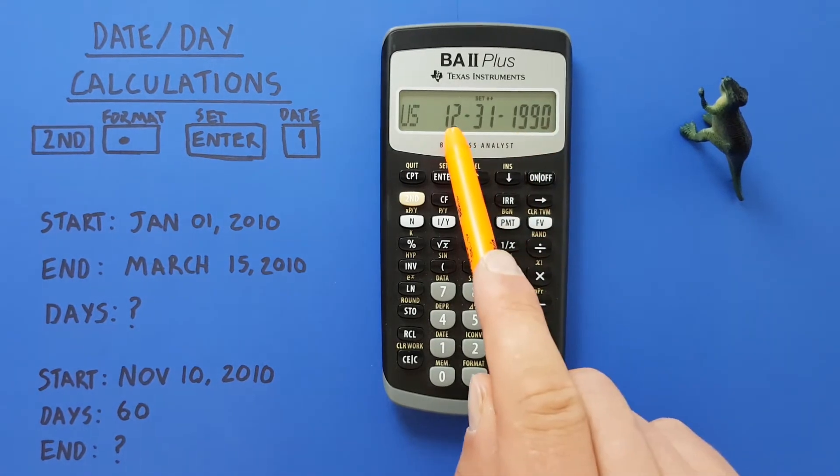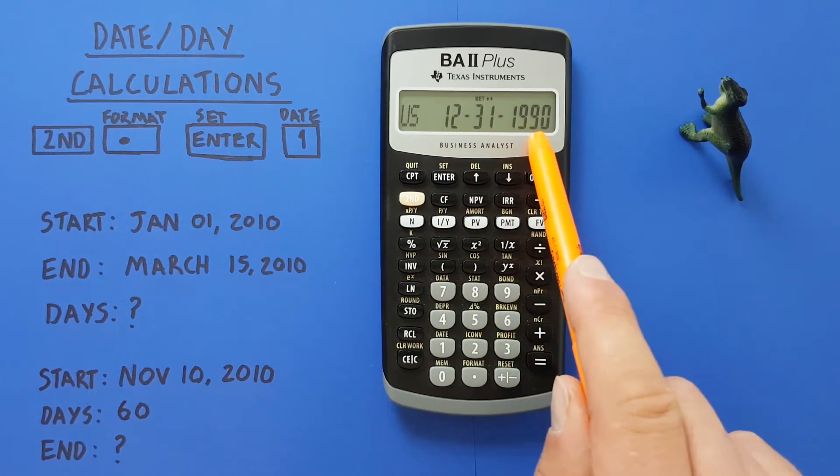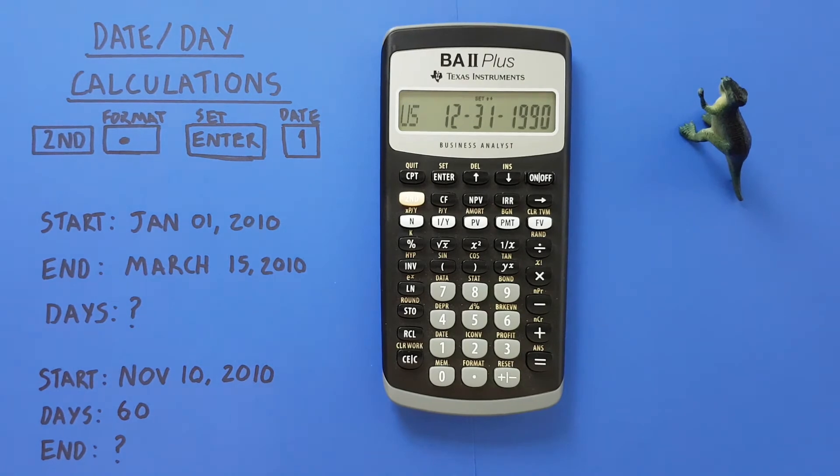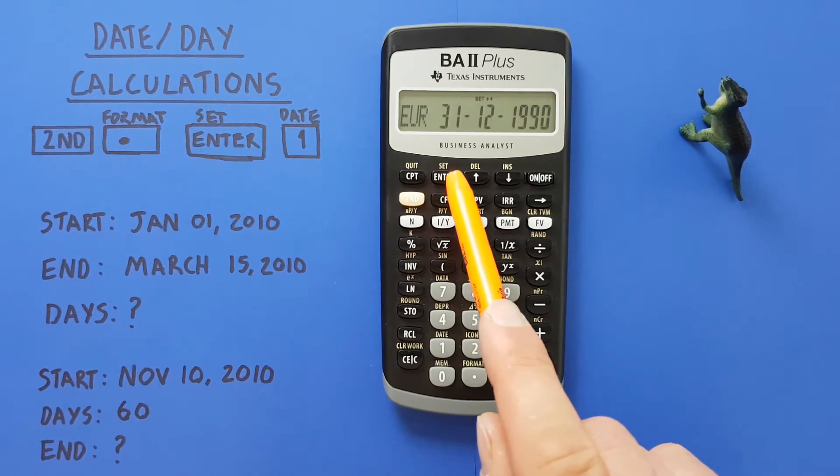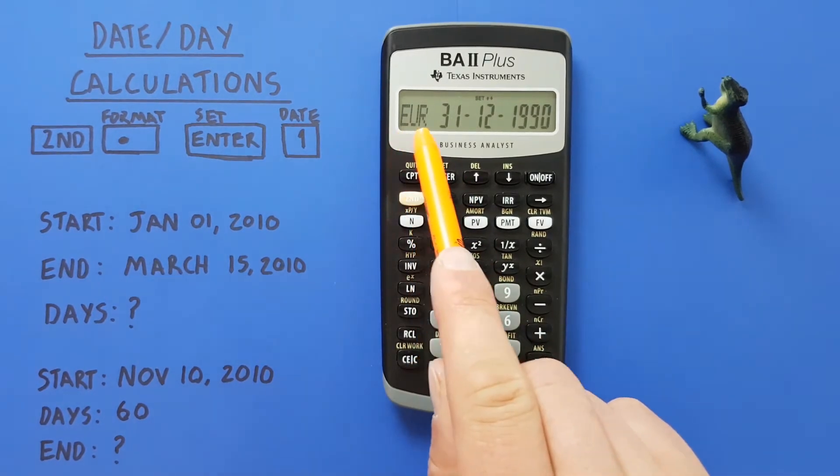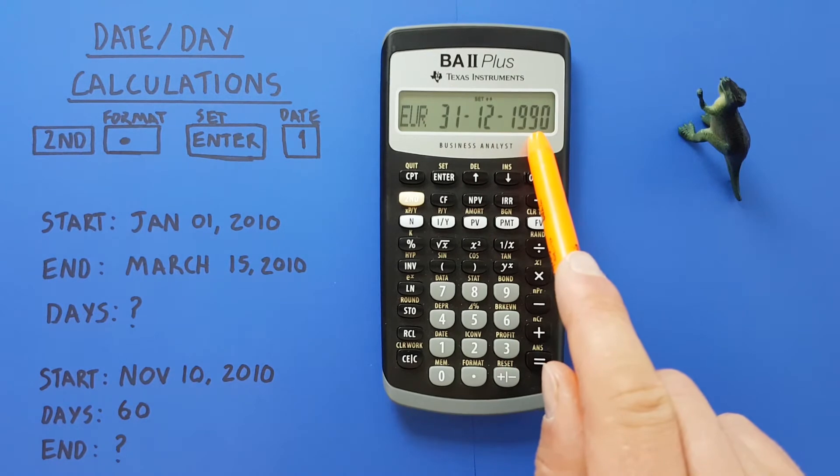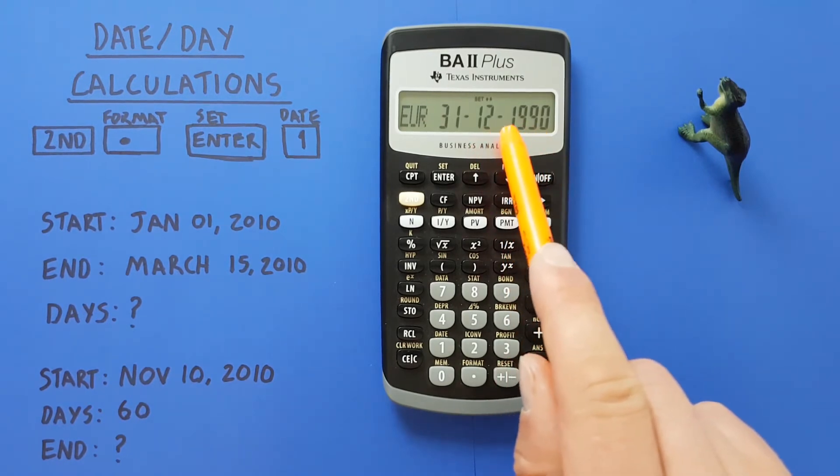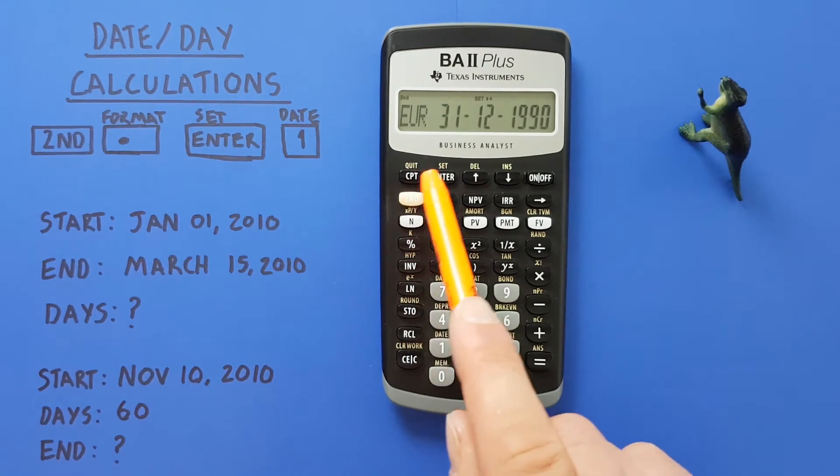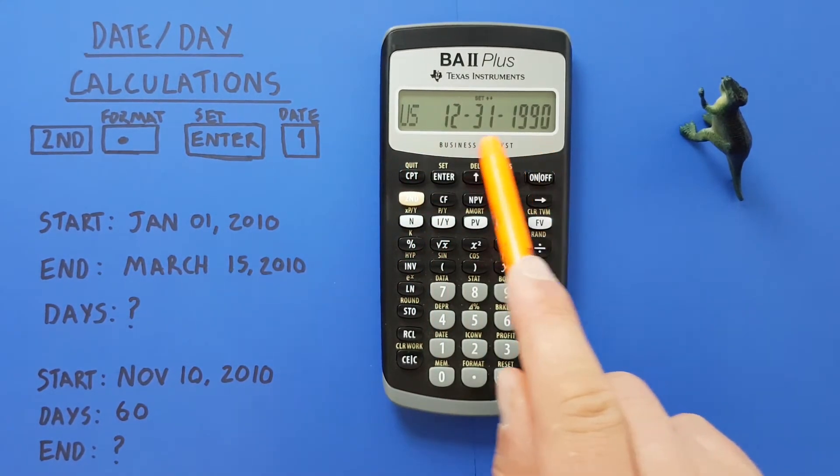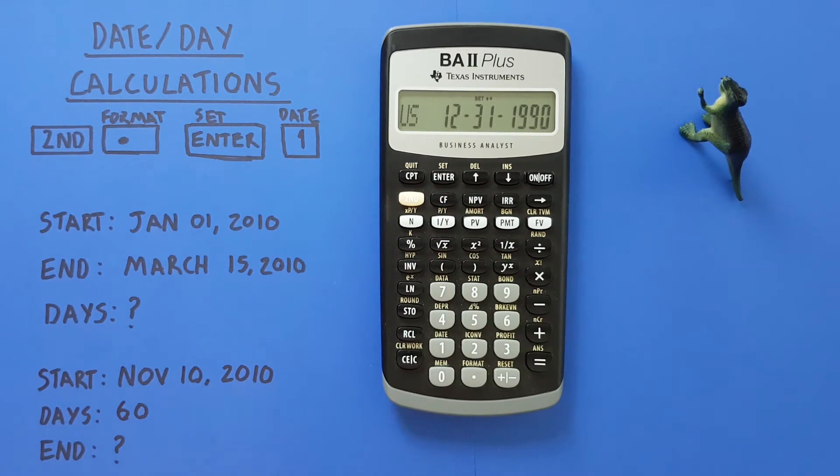We can change this by pressing the second enter key to the European version where it goes day, month, year. If we wanted to set that we would just press enter, but for this example we'll stick with the US version, so we'll press second enter again to go back to the US format.